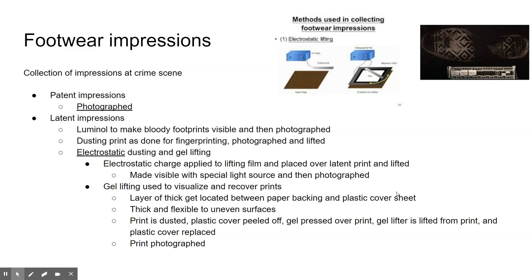There is also a technique called electrostatic dusting and gel lifting. With electrostatic dusting, a film is placed over the impression if it is made in dust, and then you run a current through the film, which causes the dust powder to adhere to the film. You can then lift and image it with a special light source and photograph it. With gel lifting, there is a layer of thick gel between a paper backing and a plastic sheet, which is good for uneven surfaces because it molds to the surface. You dust the print, peel off the gel plastic cover, press the gel down, lift the gel off the print, replace the plastic cover, and photograph the print.